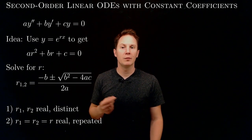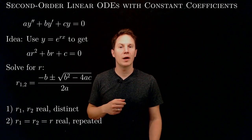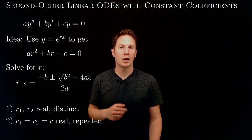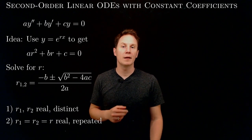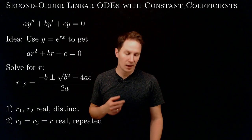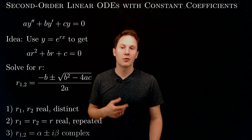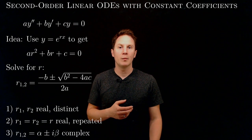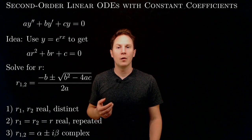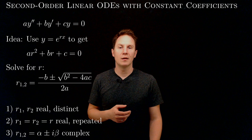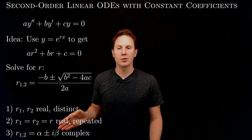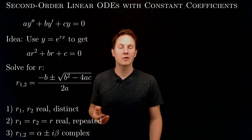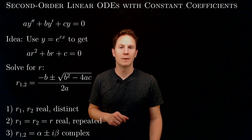Finally, when the discriminant b squared minus 4ac is negative, then we have a negative number under the square root, and therefore we get complex number solutions. The solutions will be of the form alpha plus i times beta and alpha minus i times beta. These are called complex conjugates, where alpha and beta are real numbers and i is the imaginary unit.